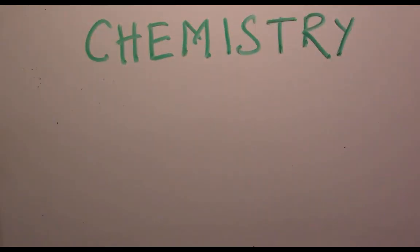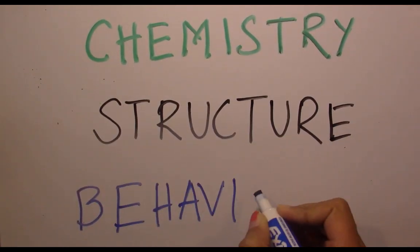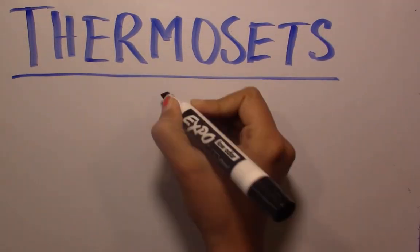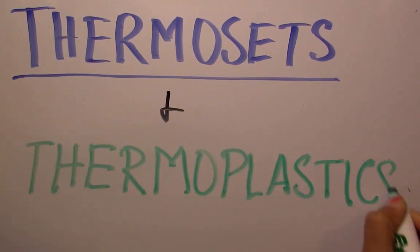Plastics can be classified in many different ways, such as their chemistry, structure and behavior. Another way to describe polymers is how they behave when heated. They can be either thermosets or thermoplastics.